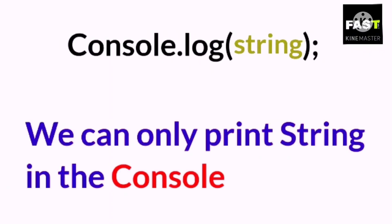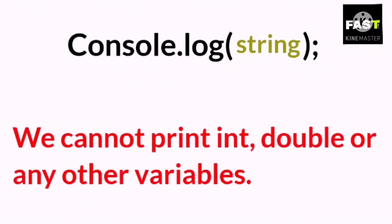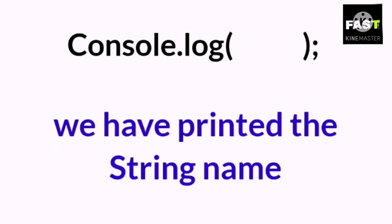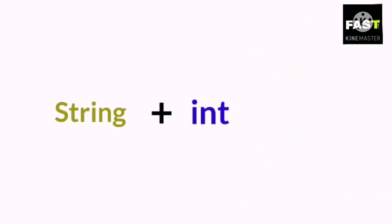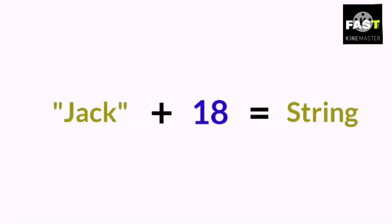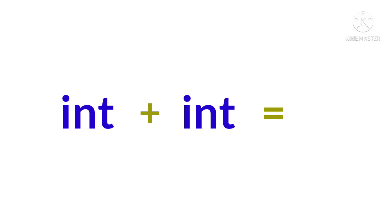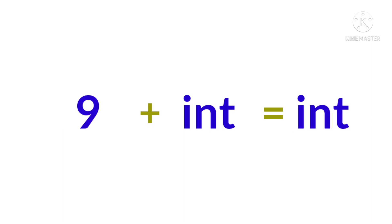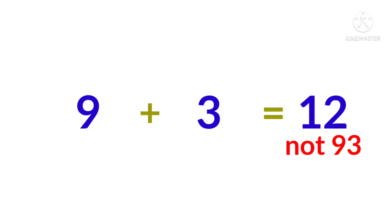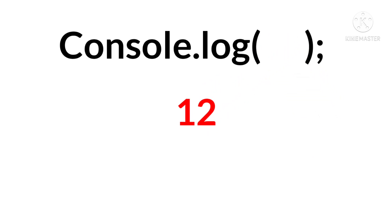We have already learned that we can only print a string in the console — we cannot print int, double, or other variables directly. If we add a string into an int variable, then the answer will be a string. For example, if we add string name 'Jack' to int age 18, then the answer will be 'Jack 18', which is a string because it contains alphabets. Similarly, if we add an int into an int, then the answer will be int only — for example, 9 plus 3 equals 12, not 93. But we cannot put this 12 directly in our code, so first we have to make it a string.